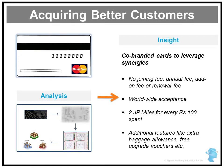The first example is from the financial services world. If you look at the credit card on the screen, you will see that this is a co-branded credit card — you can see two different logos: the Citibank logo on the right side and the Jet Airways logo on the left side. Citibank launched a credit card co-branded with Jet Airways. What's different about this card is that there is no fee of any kind — no joining fee, no annual fee, no add-on fee, no renewal fee. On top of all this, every time you spend money on your credit card you get free JP Miles — two JP Miles for every hundred rupees spent. JP Miles are miles on the Jet Airways loyalty program, plus additional features like extra baggage allowance and free upgrade vouchers.